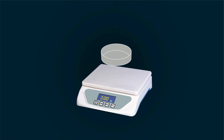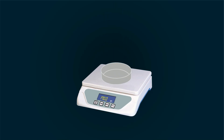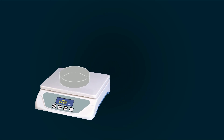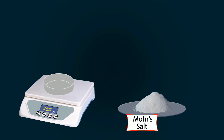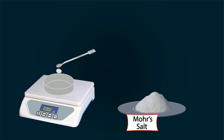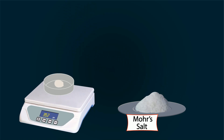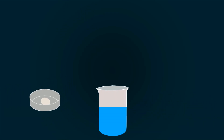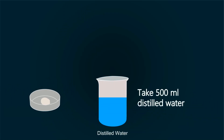Let's start the preparation. First, take a weight balance and power it on. Put a watch dish on it and tare it down. Add Mohr's salt into it with the help of a spatula, measuring precisely until the weight reads 39.2 grams.